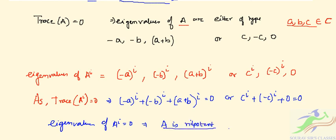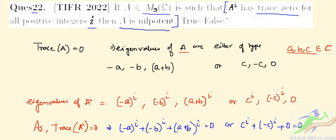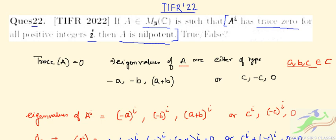So in this case, our statement is true. If A^i has trace 0 for all positive integers i, then A will be nilpotent. This is how we solve the problem.